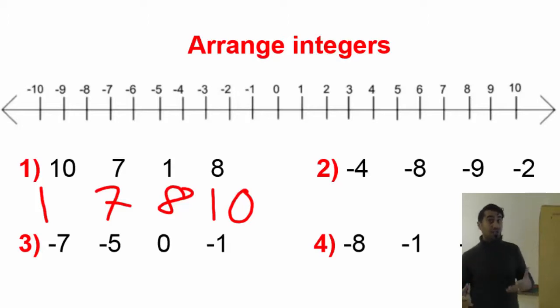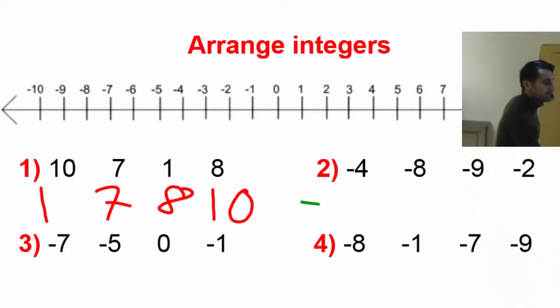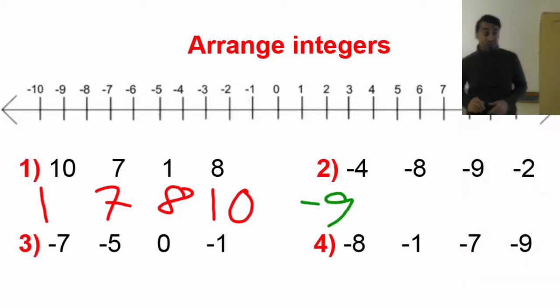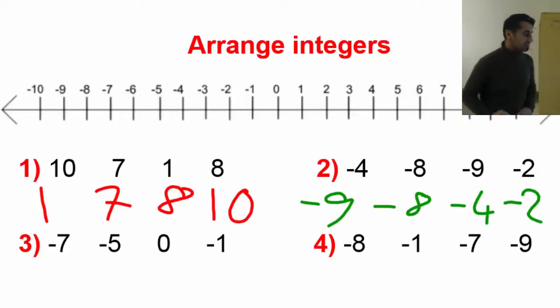Therefore, you should start from small to big. You should start with the number that's far from 0 if it's negative. So in this case, negative 9. That's the lowest in value. And then negative 8, and then negative 4, and then negative 2.